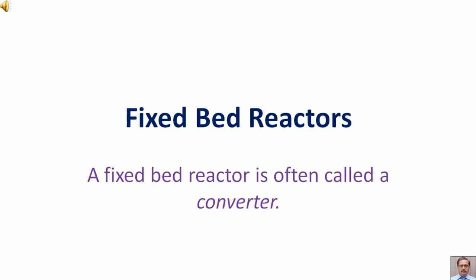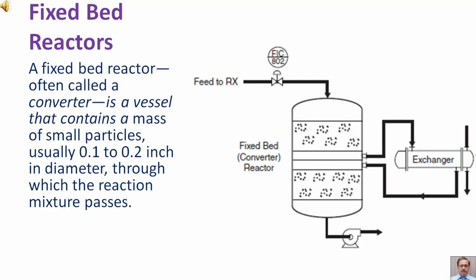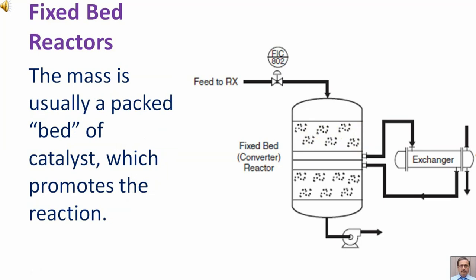A fixed bed reactor, often called a converter, is a vessel that contains a mass of small particles, usually 0.1 to 0.2 inch in diameter, through which the reaction mixture passes. The mass is usually a packed bed of catalyst which promotes the reaction.